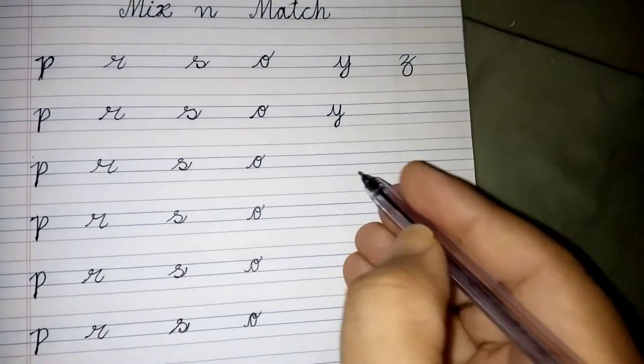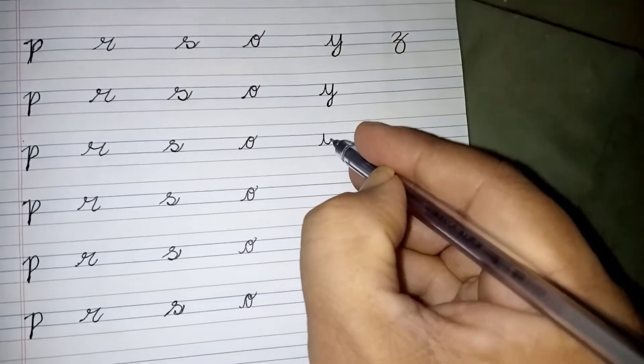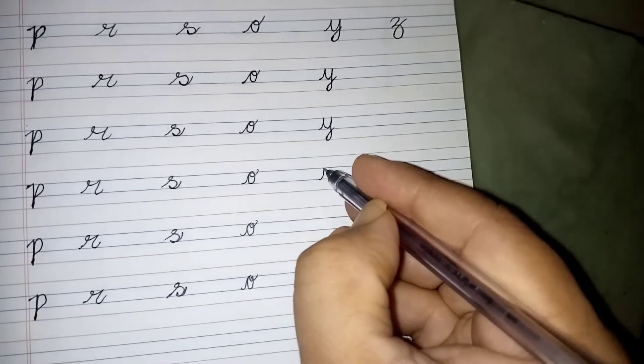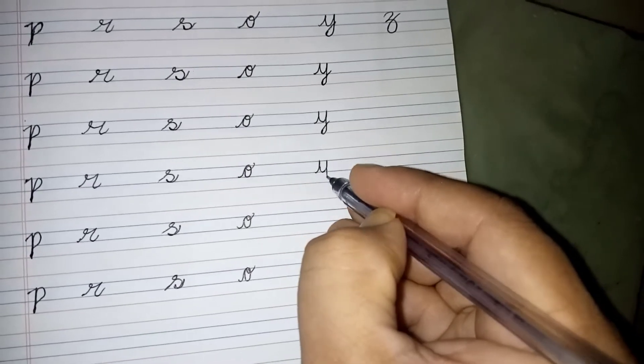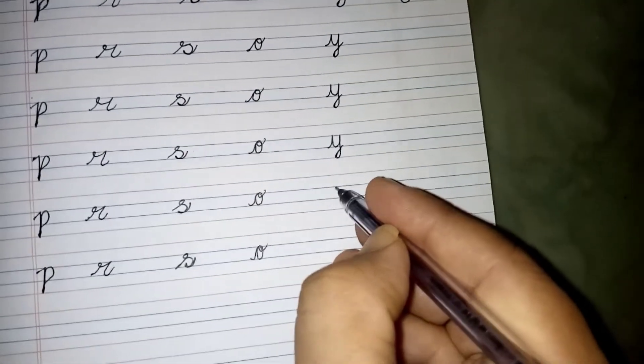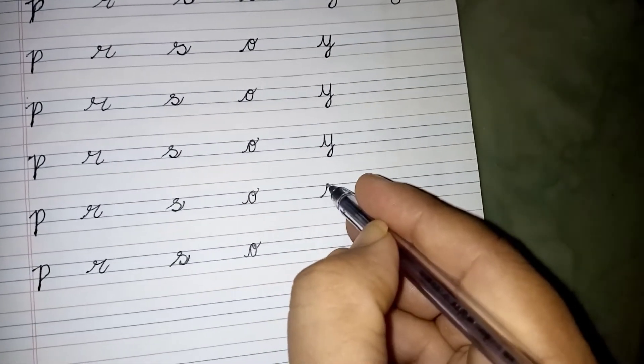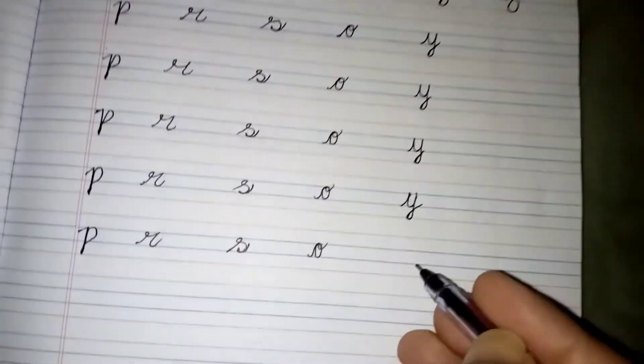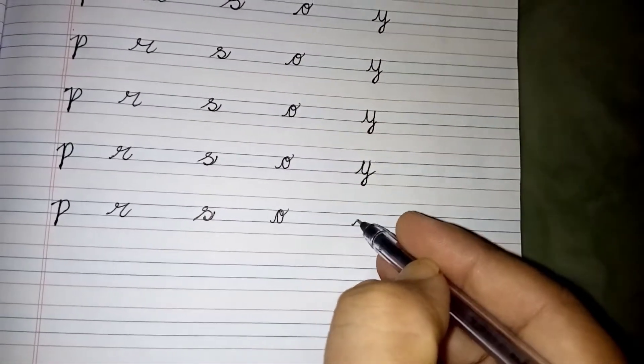The next letter is y. You start from here and go to the bottom line. Why? Y starts from there and goes to the bottom line. Similarly, start, move, and touch to the bottom line, and again it goes to baseline.